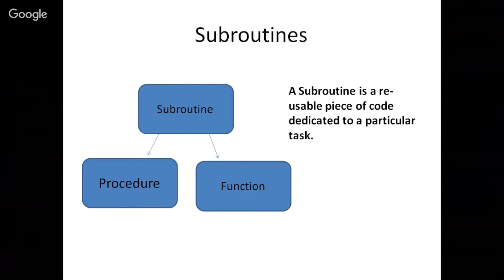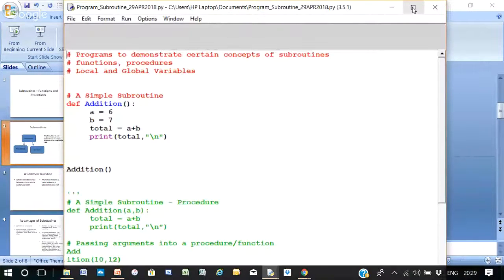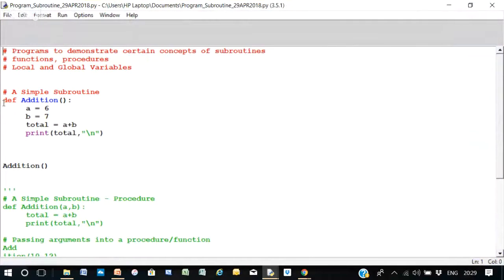Now let's look at a program which involves subroutines and that will make it clearer. So here we have a simple subroutine. This is written in Python. Python calls subroutines functions and def means define. Define a function called addition and it's a equals 6, b equals 7, total equals a plus b, print total.